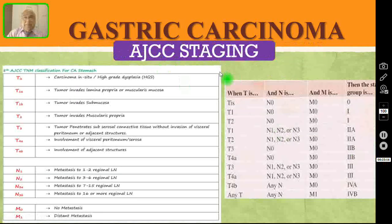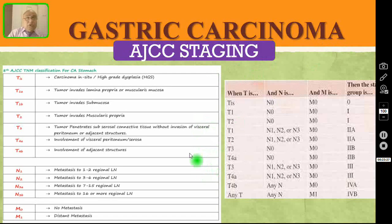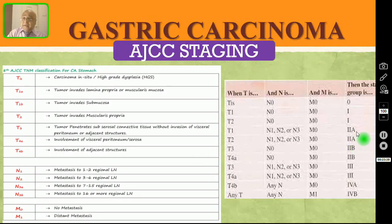For staging, the AJCC 8th Edition staging is the latest for gastric carcinoma. The TNM staging divides disease into stage 1, stage 2A, stage 2B, stage 3, stage 4A and 4B. Please pause the video and read all these details carefully.